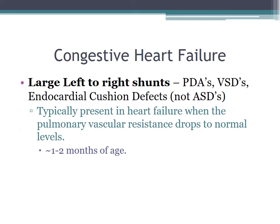An important thing to know is that large left-to-right shunt lesions like PDAs, VSDs, and endocardial cushion defects typically present in congestive heart failure at about one to two months of age. That happens when the pulmonary vascular resistance drops to normal levels at that one to two-month point. It's also important to know that ASDs do not fit into this category.